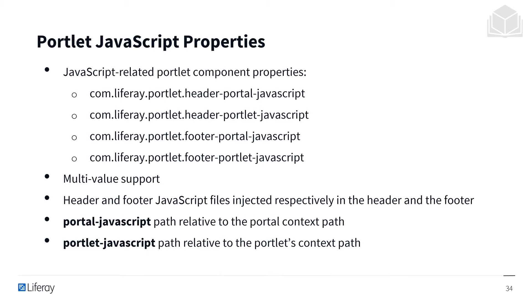The property values can be local paths or external URLs. If JavaScript files are hosted locally, they are by convention stored in the meta-inf resources .js folder. While this approach for including JavaScript works in simple cases, there are limitations to it, especially when using third-party libraries.